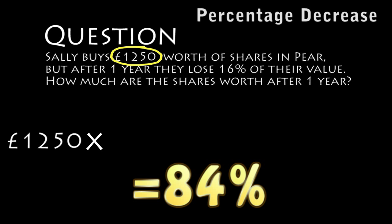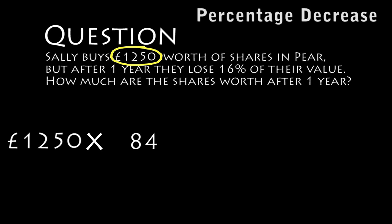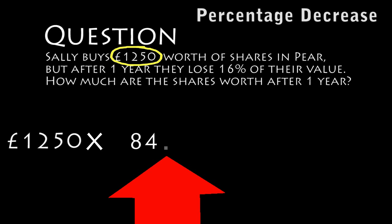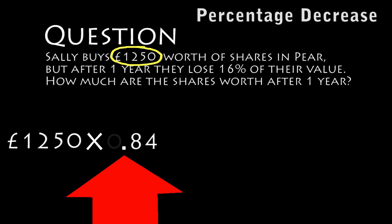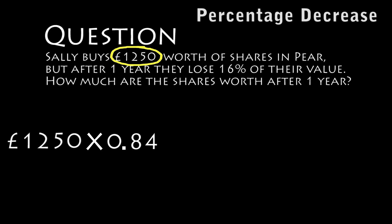So Sally, after one year, is going to have 84% of the value left. We multiply, just like before, by 84% — but it's going to be 84% as a decimal. We take 84 and divide it by 100, which gives us £1,250 times 0.84.